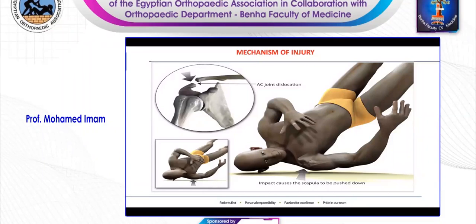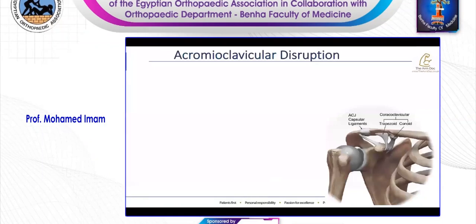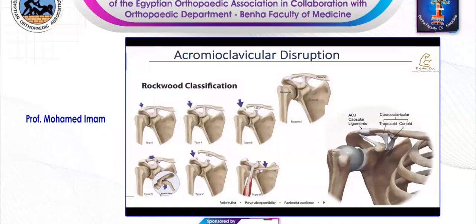We have to understand that the acromioclavicular joint is a subcutaneous joint without a large sleeve of muscle protection, more prone to injury mainly because the sternoclavicular joint is very stable. Direct and indirect trauma can cause these types of injuries. However, Tossy and Rockwood highlighted the cascade of disrupted structures: starting with the acromioclavicular ligament, then the coracoclavicular ligament, the coracohumeral ligament, deltotrapezial fascia, and finally loss of the suspensory support of the shoulder girdle. They popularized their classification, which is widely used, though evidence did not really support strong inter- and intra-observer reliability.